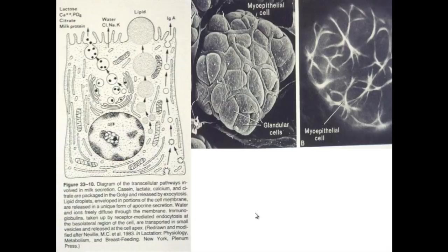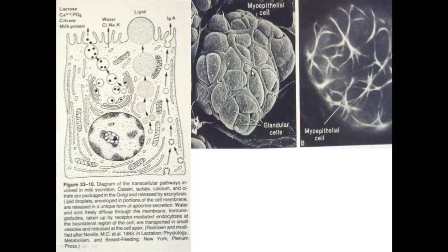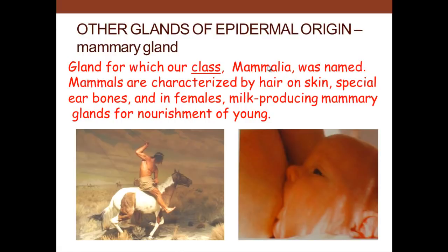Here we can see a milk cell that produces various things. By merocrine secretion, a milk protein — casein — and lactose are produced. The cell also produces fat, and fat is released via apocrine secretion, where the fat cells themselves are lined by the plasma membrane that pinches off the apex of the cell. These are individual cells, and this is the myoepithelium — muscle cells that make a net around the gland to cause milk ejection to occur.